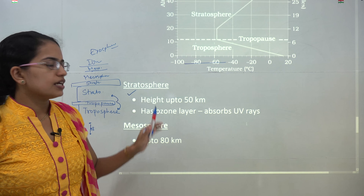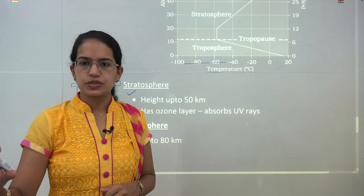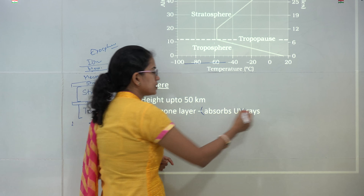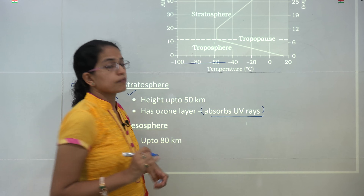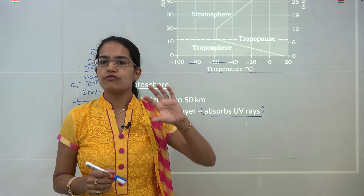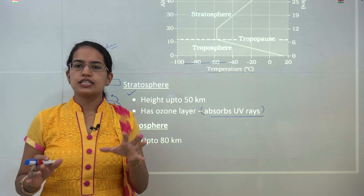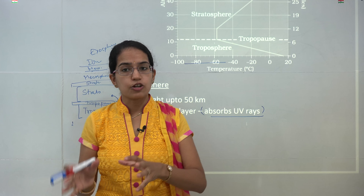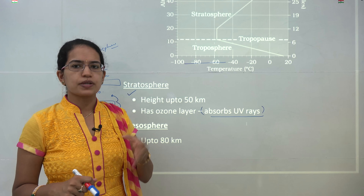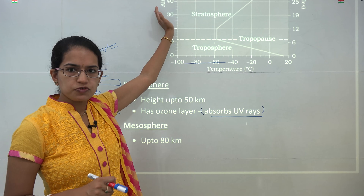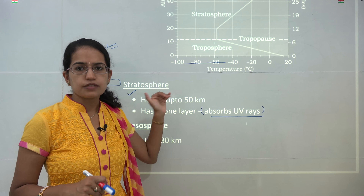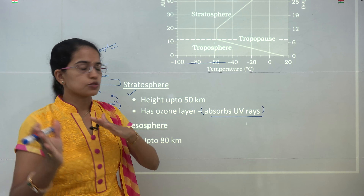The stratosphere is known to have the ozone layer, which absorbs harmful ultraviolet rays. Many students ask in which layer commercial jet planes fly versus small planes and helicopters. All small planes, charter planes, and helicopters fly in the troposphere, however commercial jet planes fly in the lower stratosphere or at the boundary between the stratosphere and troposphere.